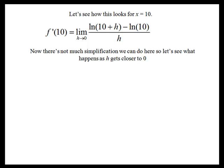Now we'll use a table to see what's going to happen as h gets closer to 0, because there's not a whole lot of nice simplification we can do.